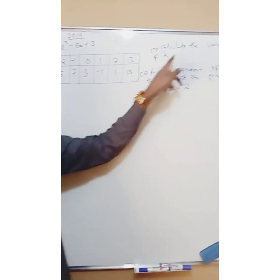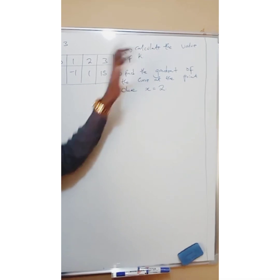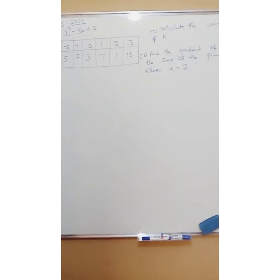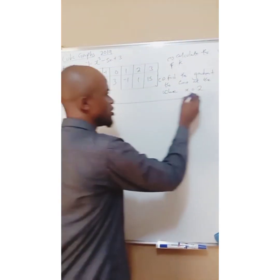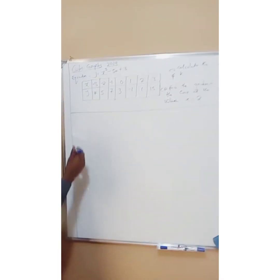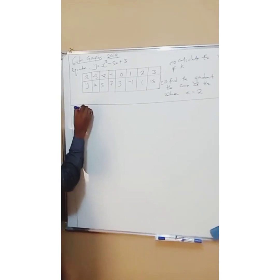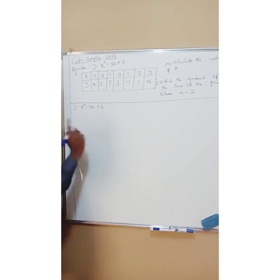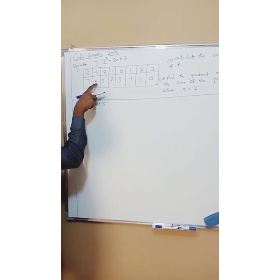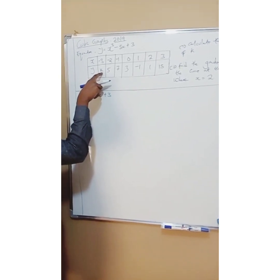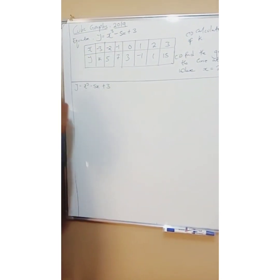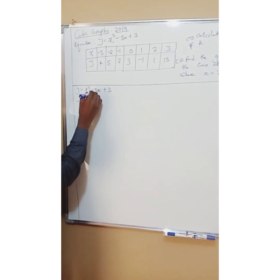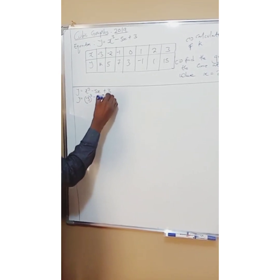The first question says: calculate the value of k. On your graph, never use a pen — use a pencil. So my original equation is y = x³ − 5x + 3. The k is the y-value where x equals negative 3, so I substitute: y = (−3)³ − 5(−3) + 3.